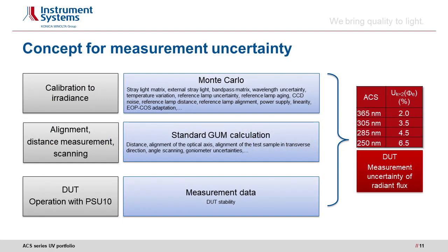Every measurement is susceptible to measurement uncertainty that must be investigated. This means that all influencing factors must be identified, and the system must be set up to ensure the lowest possible values for measurement uncertainty. Essentially, there are two ways of determining measurement uncertainties. One option is to carry out various different measurements from which the influencing variables can be identified statistically — that means deviations for defined measurements — though this is usually a tedious process as a large number of measurements are necessary. The second option is simulation, for example with the Monte Carlo simulation. We use the latter for calibration to irradiance.